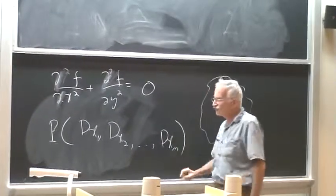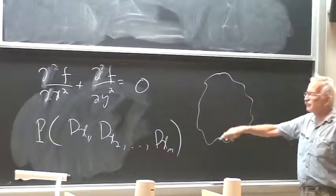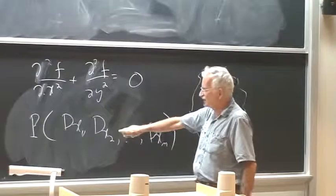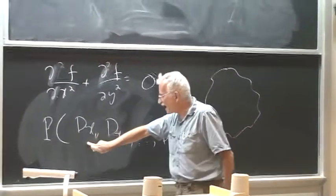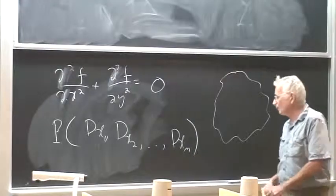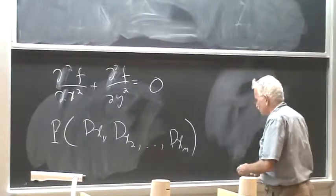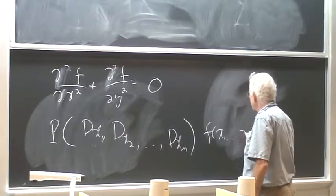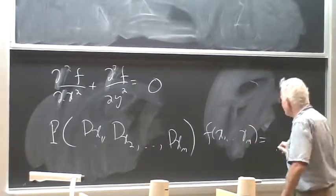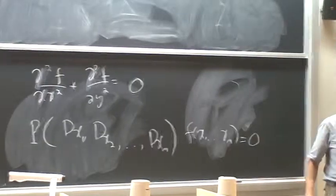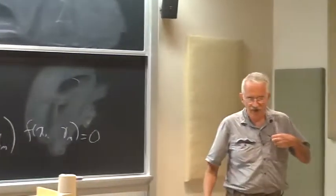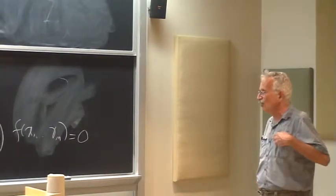And if it's constant coefficient, you can write it as a polynomial in the differentiation, in derivative with respect to X1, respect to X2, respect to Xn. Of course, it's easy to find solutions. To find other solutions is not so easy. And that's the other major contribution of Leon Ehrenpreis later on.